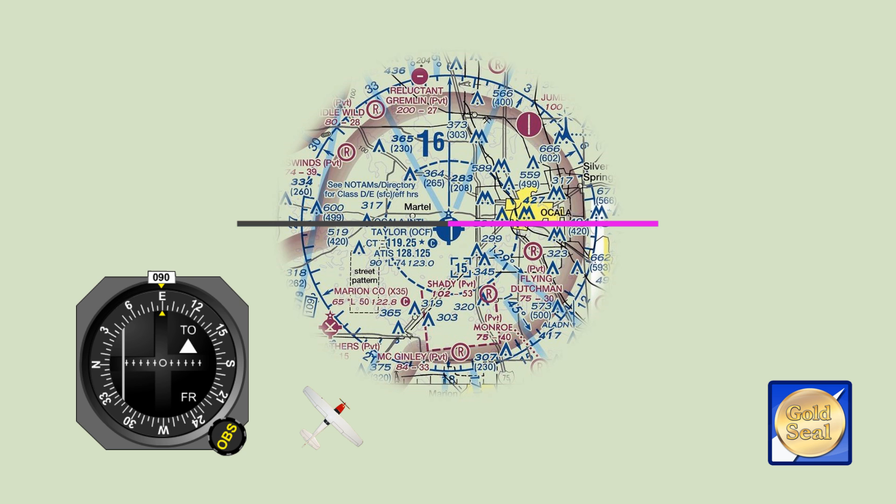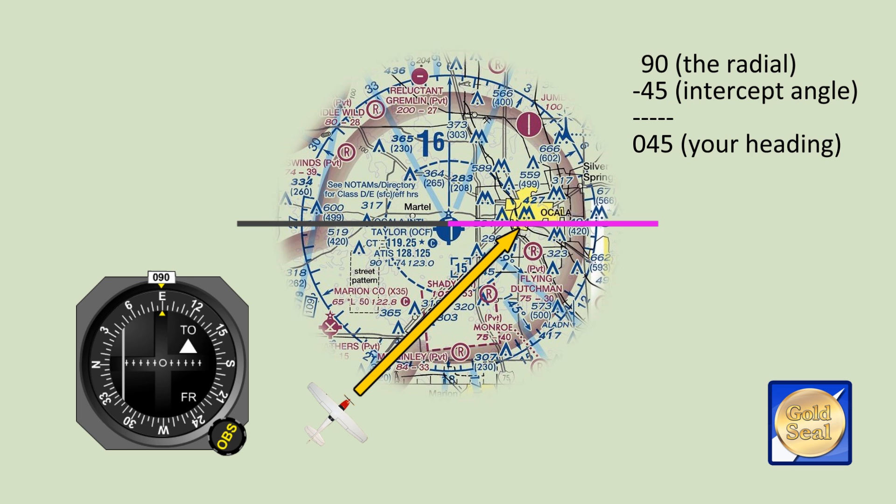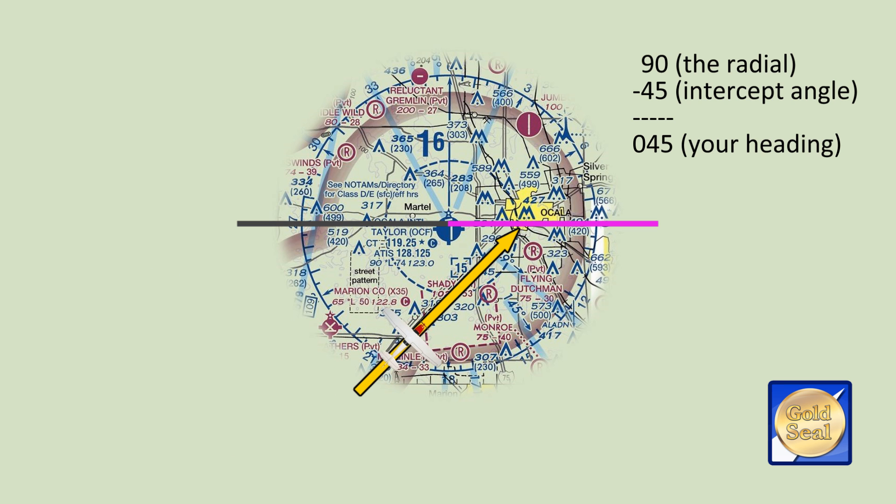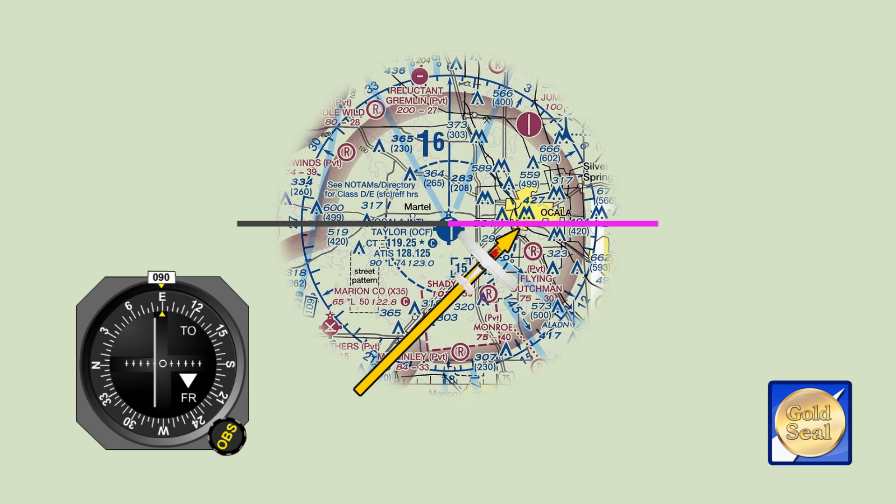So figure a bearing that will allow you to intercept the radial at an angle of 30 or maybe 45 degrees. Assuming a 45 degree intercept, subtract 45 from 90, and that gives you an initial heading of 45 degrees. Fly 045, applying any needed wind correction, and you'll approach the 090 radial at a 45 degree angle. When the CDI, the needle on the indicator, gets almost to the center, turn right to the outbound heading of 090 and fly eastward.